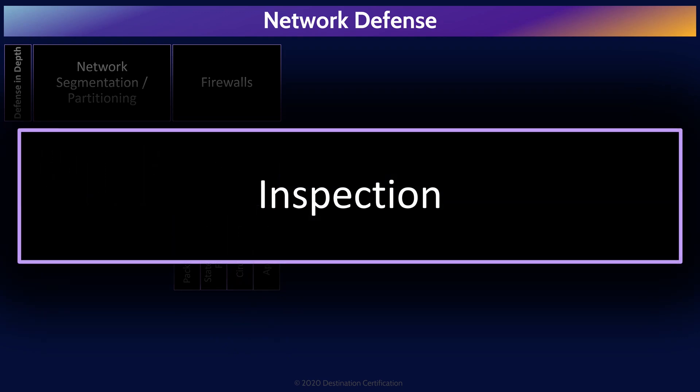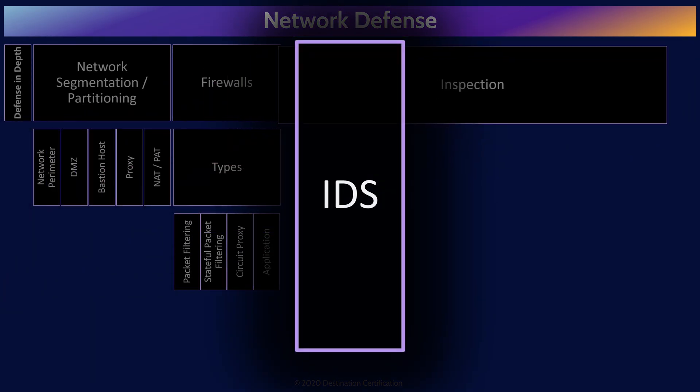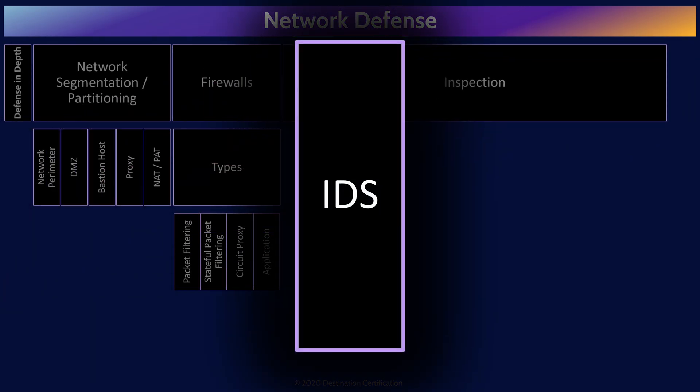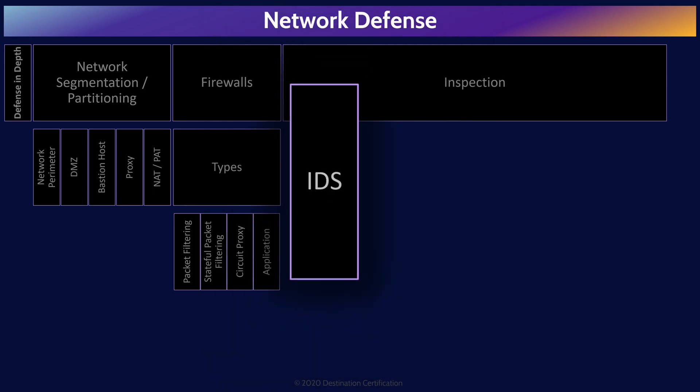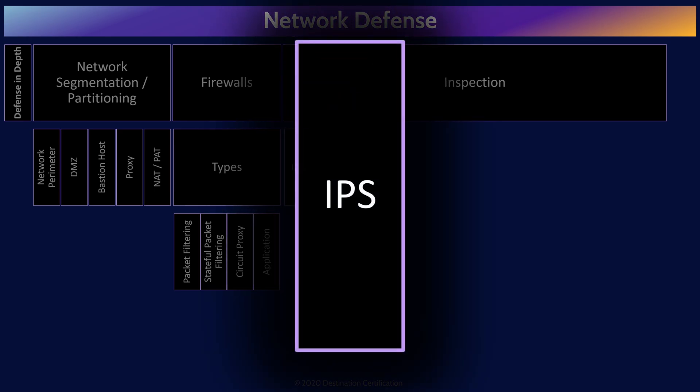Moving on from firewalls, we'll talk about the major network monitoring tools — IDS and IPS systems. IDS, intrusion detection systems, are designed to inspect network traffic packets to detect potentially suspicious activity. If an IDS detects something suspicious, it will raise an alarm. IPS, intrusion prevention systems, do exactly the same thing as an IDS, but go an important step further — if they detect something suspicious, they can potentially block the suspicious traffic, hence preventing an attack. IDSs can work in combination with a firewall to block traffic, but IPSs can detect and block traffic on their own.